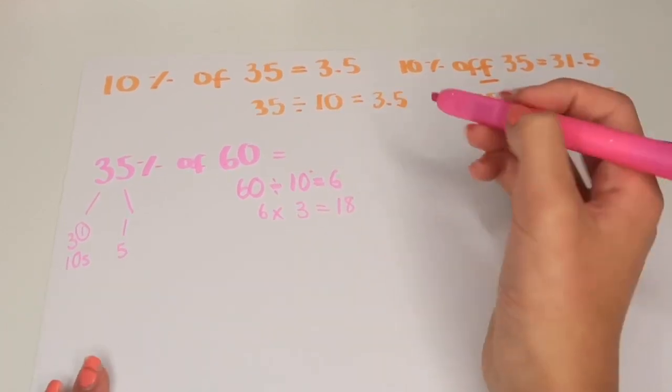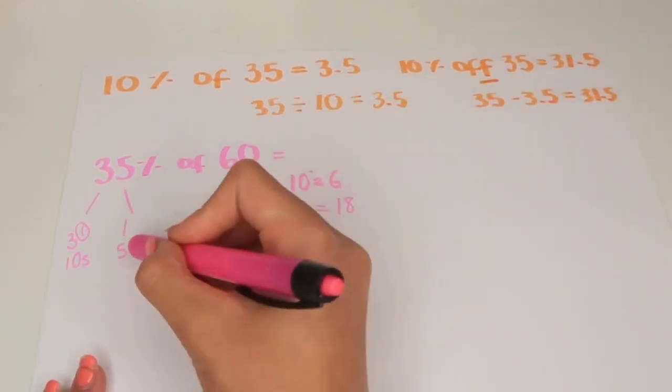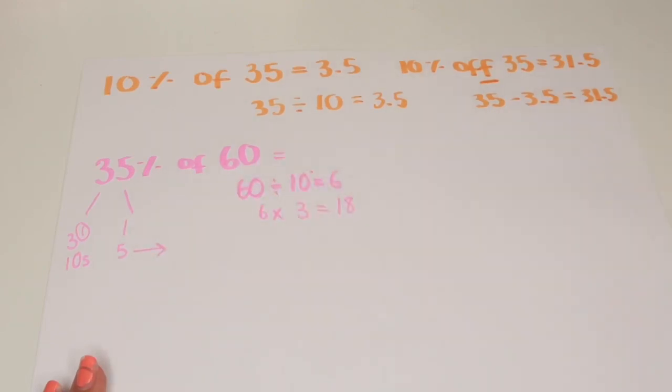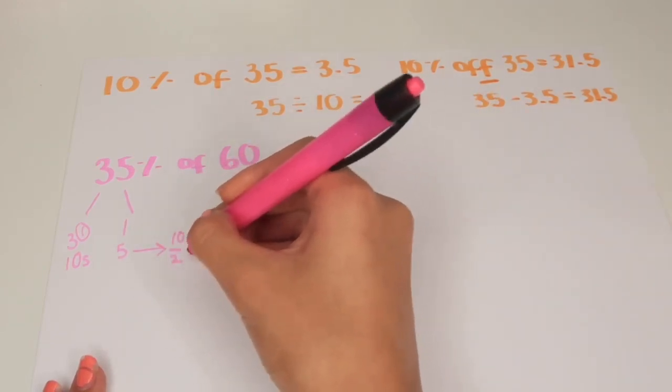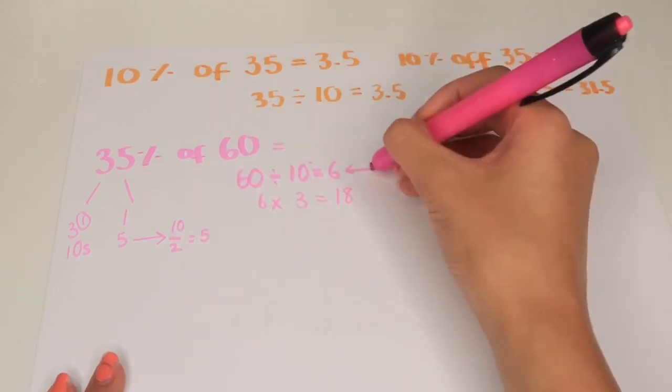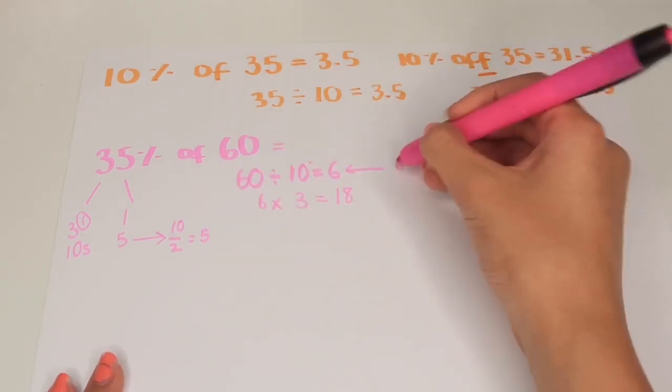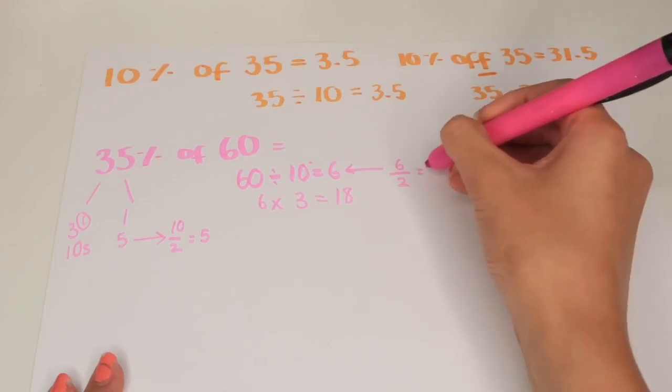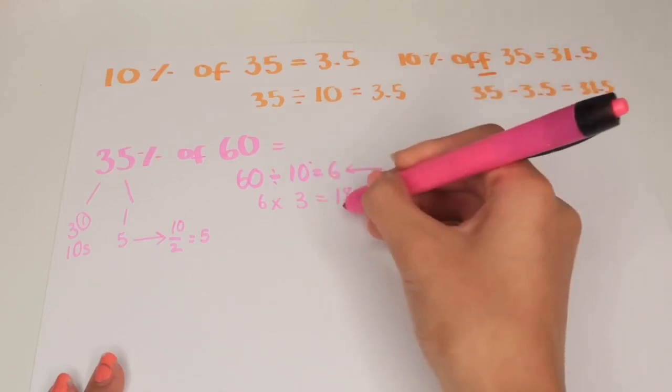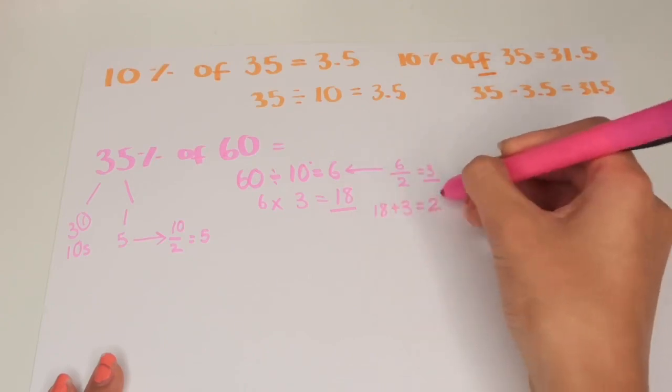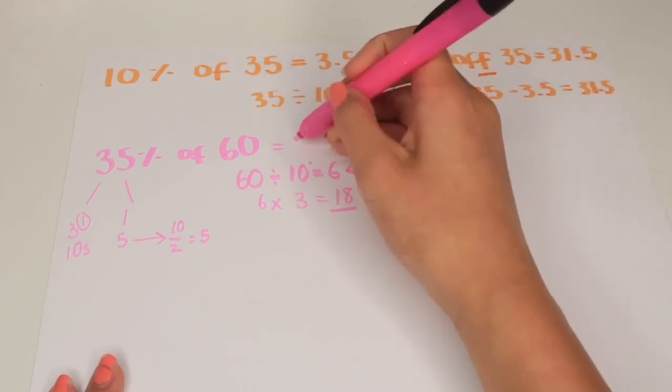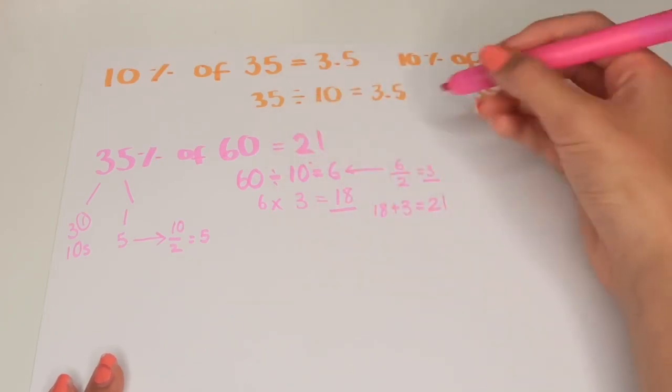After this we need to find the 5%. We know that half of 10 is 5. So we do the 10% that we found which is 6 divided by 2 which is 3. Now we have the 30% and the 5%. We add these together which gets 21. So 35% of 60 is 21.